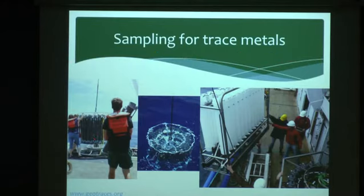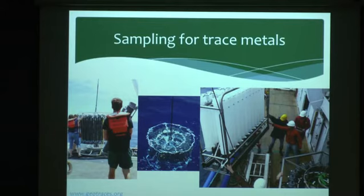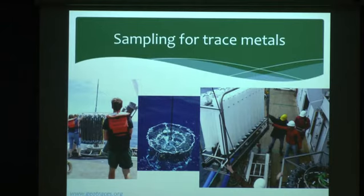We still have to use an iron line to communicate with the rosette to close bottles at the right depths, but we use a Kevlar-coated line. The Dutch version is fundamentally different — their bottles are custom-made of Teflon all the way through, on a titanium frame. The US puts shower caps on the bottles and offloads individual bottles into a van to sample. The Dutch bring the entire rosette into a van, and their people wear shower caps — the joke is the US puts shower caps on the bottles, the Dutch put them on their people.